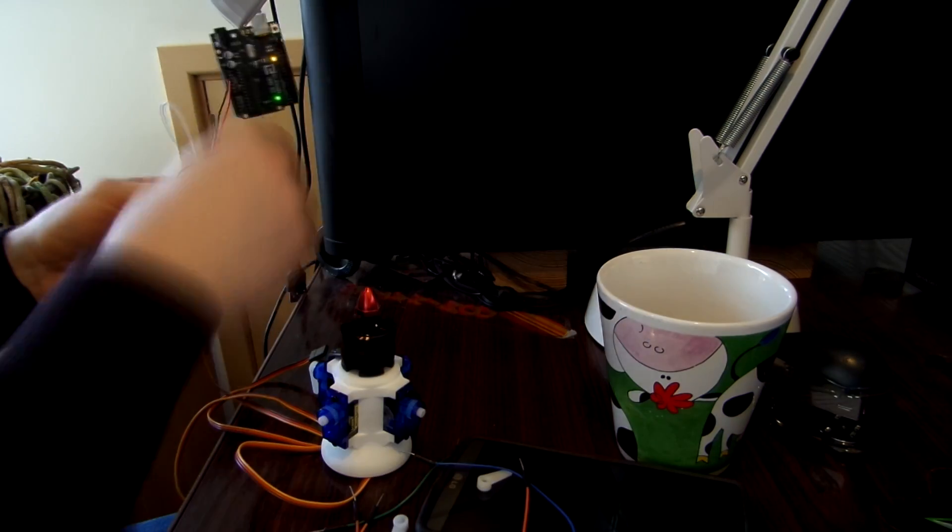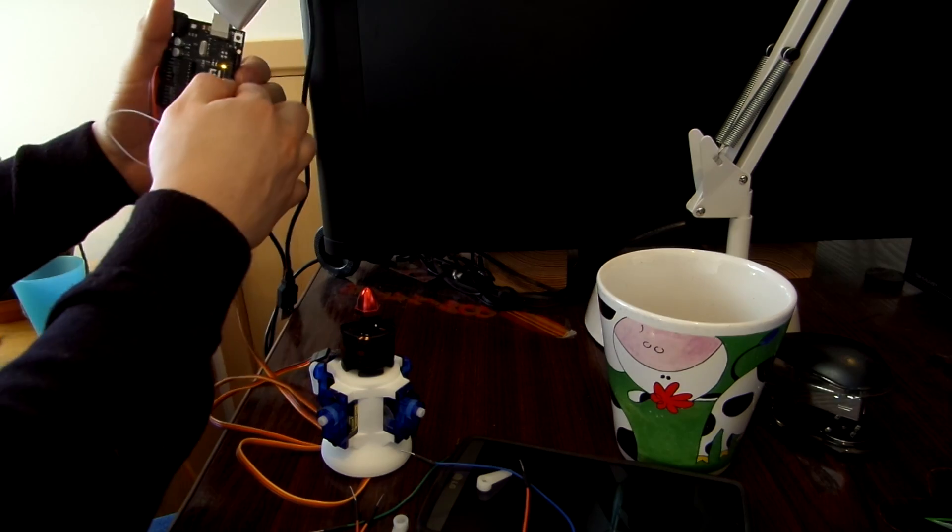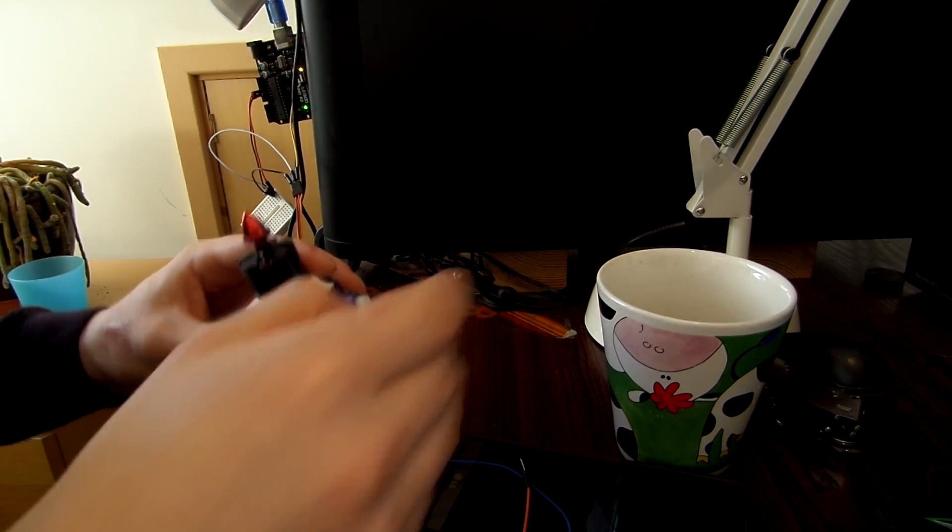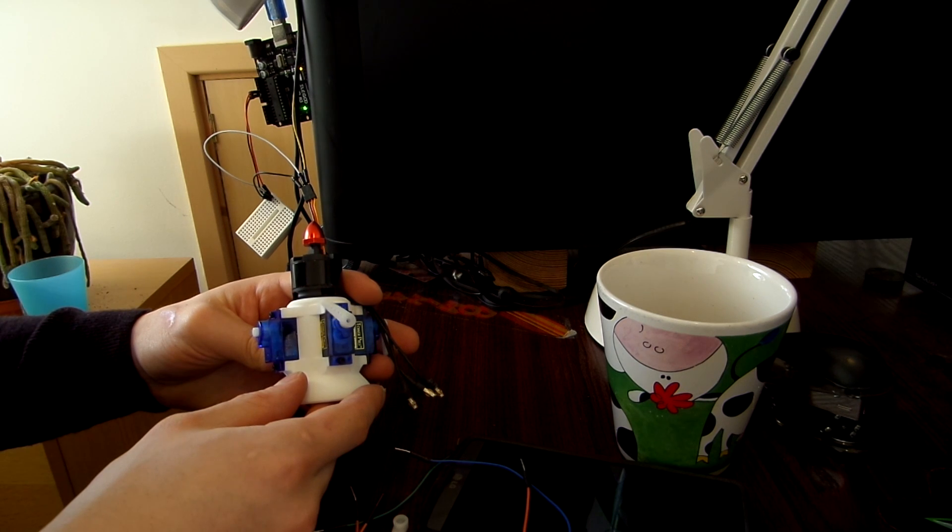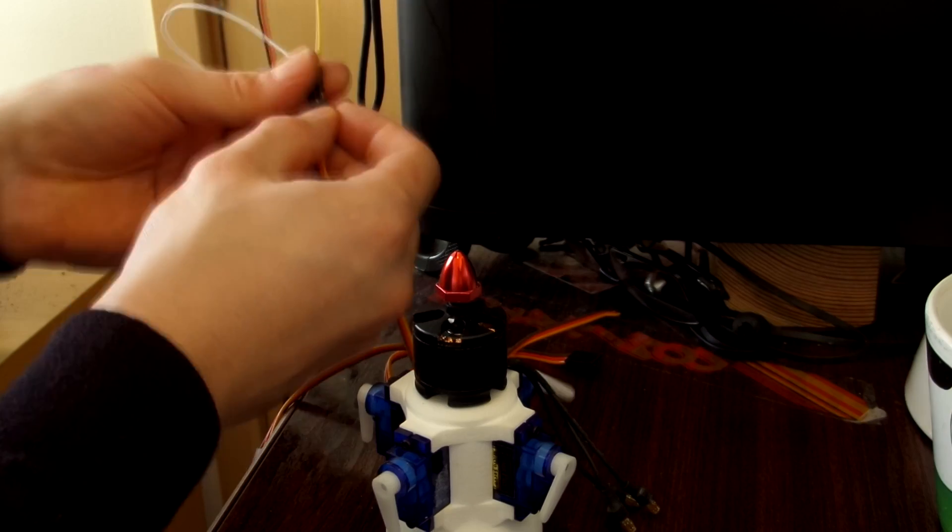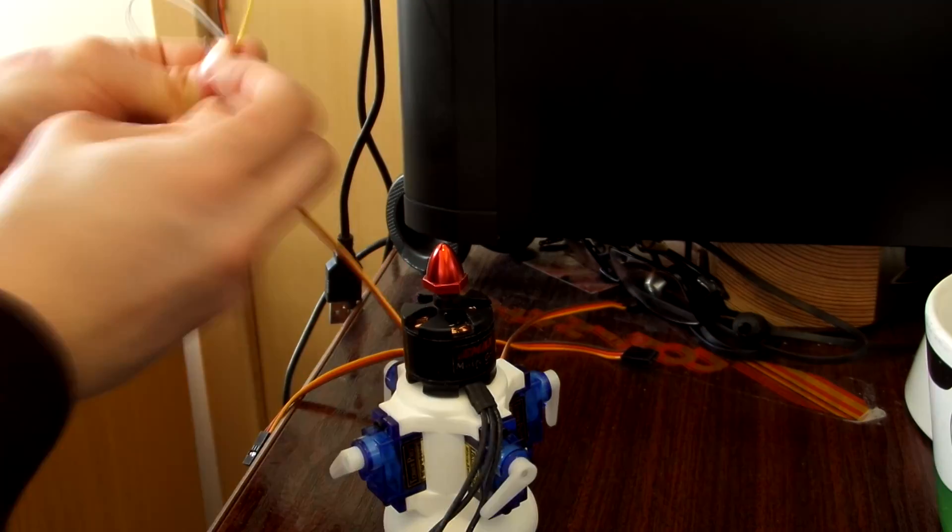And then I ran another bit of code just to set each servo to 90 degrees which is the center because these servos go from 0 to 180. So I set it to 90 degrees for each one so that I would know where to put the little arm to make sure that it has the biggest range of motion possible.